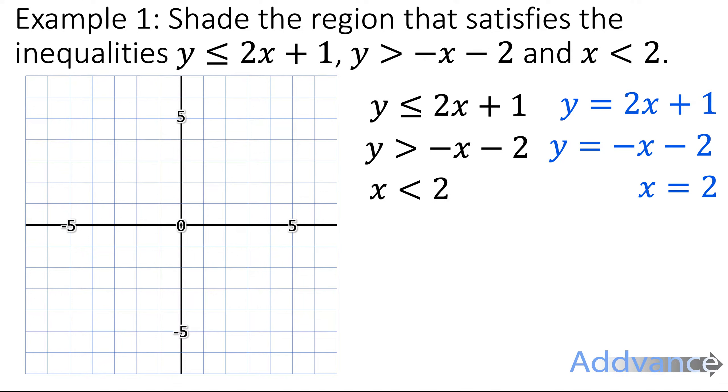And we graph those lines. We start by looking at the y-intercept and then we go up by the gradient. Here we've got a y-intercept of 1 and a gradient of 2. This is just about graphing straight lines.